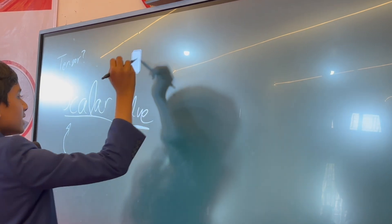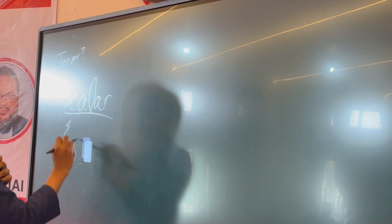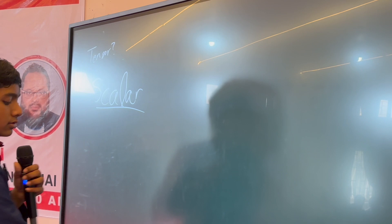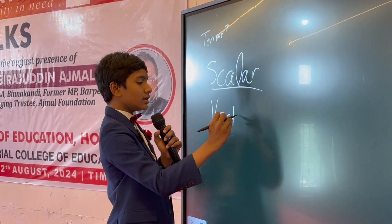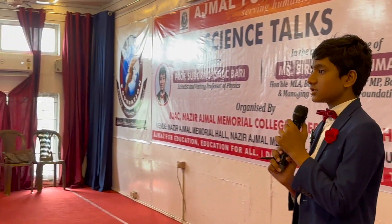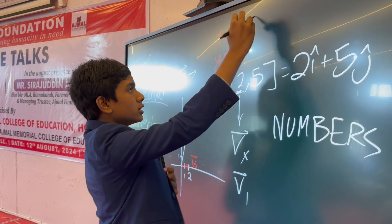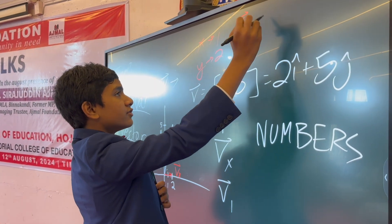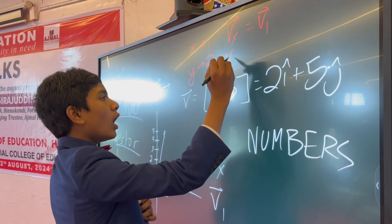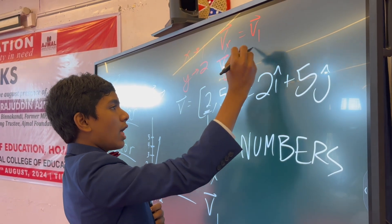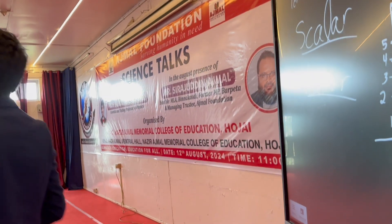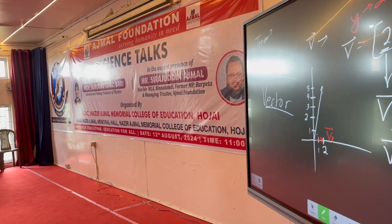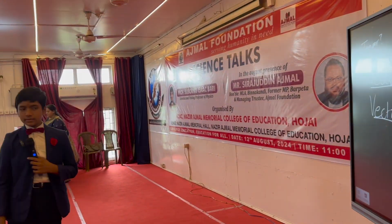So a scalar is just any real number. Now let's move to the concept of a vector. Does anybody know what a vector is? So vx becomes v1 and vy becomes v2 — this is just so we can generalize it past the second and third dimension into however many dimensions we want.